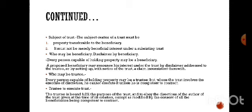The subject matter of a trust must be property transferable to the beneficiary. That trust property is the subject matter — it will be transferred to the trustee for the benefit of the beneficiary. It must not be merely a beneficial interest under a subsisting trust. Who may be a beneficiary: every person capable of holding property may be a beneficiary. A proposed beneficiary may renounce his interest by a disclaimer addressed to the trustee or by setting up a claim inconsistent with the trust.